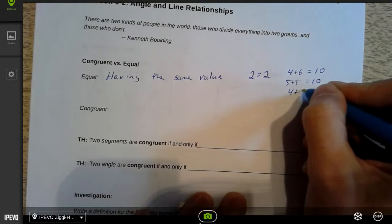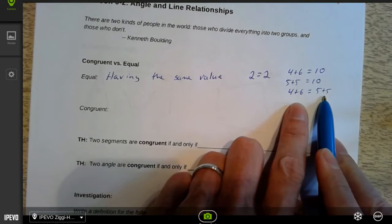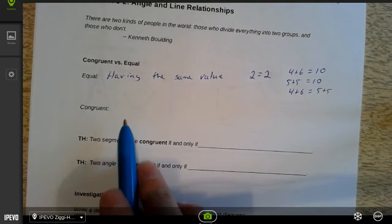So you could say four plus six is equal to five plus five because they have the exact same value. But congruent doesn't have to do with value. Congruent means that they have the same measurement.